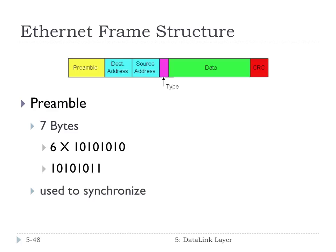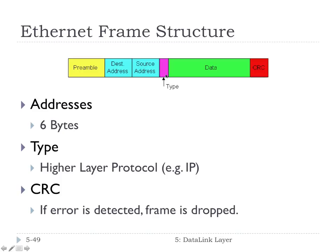Next we have the 48-bit destination address and the 48-bit source address — 48 bits is six bytes, so six and six. The type is a code that represents what higher-layer protocol, what network protocol, is encapsulated in this frame. There's a special code that means IP, and that's mostly IP these days, but there used to be more of a battle for the network layer. Not many network protocols are really around as much now.